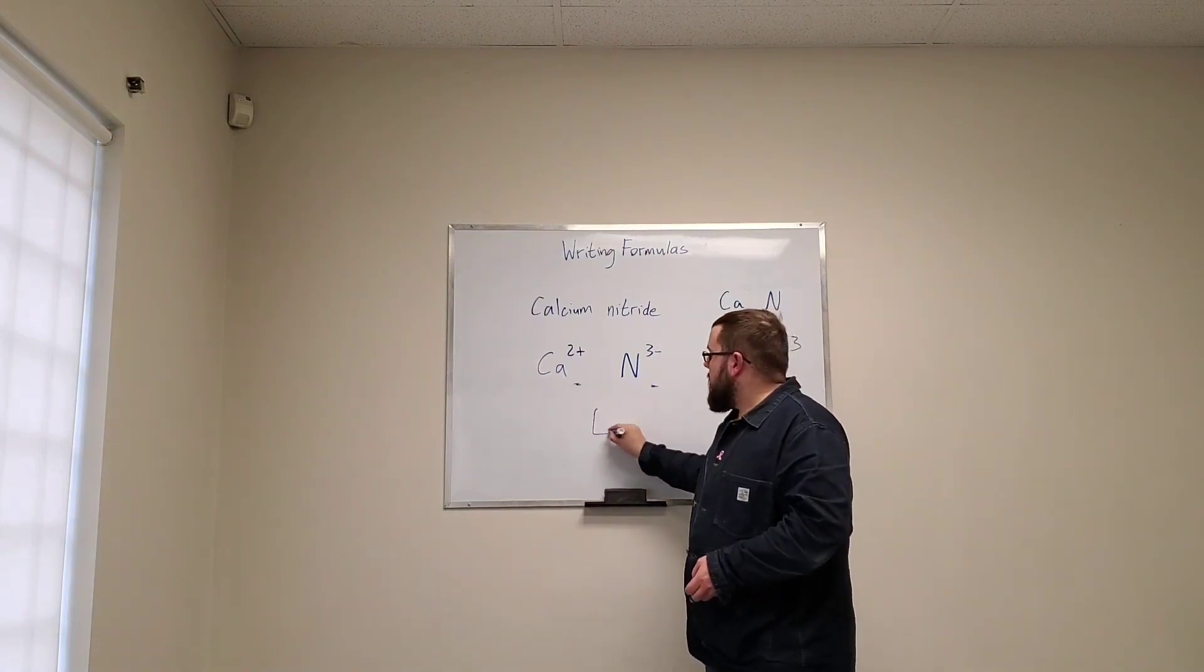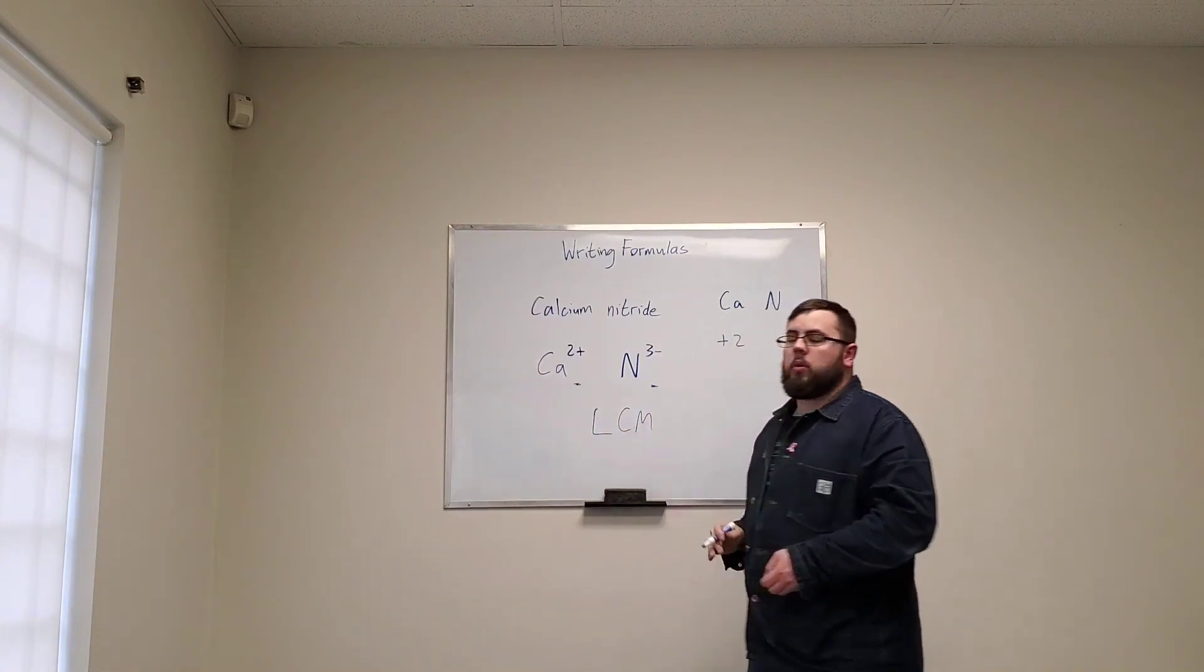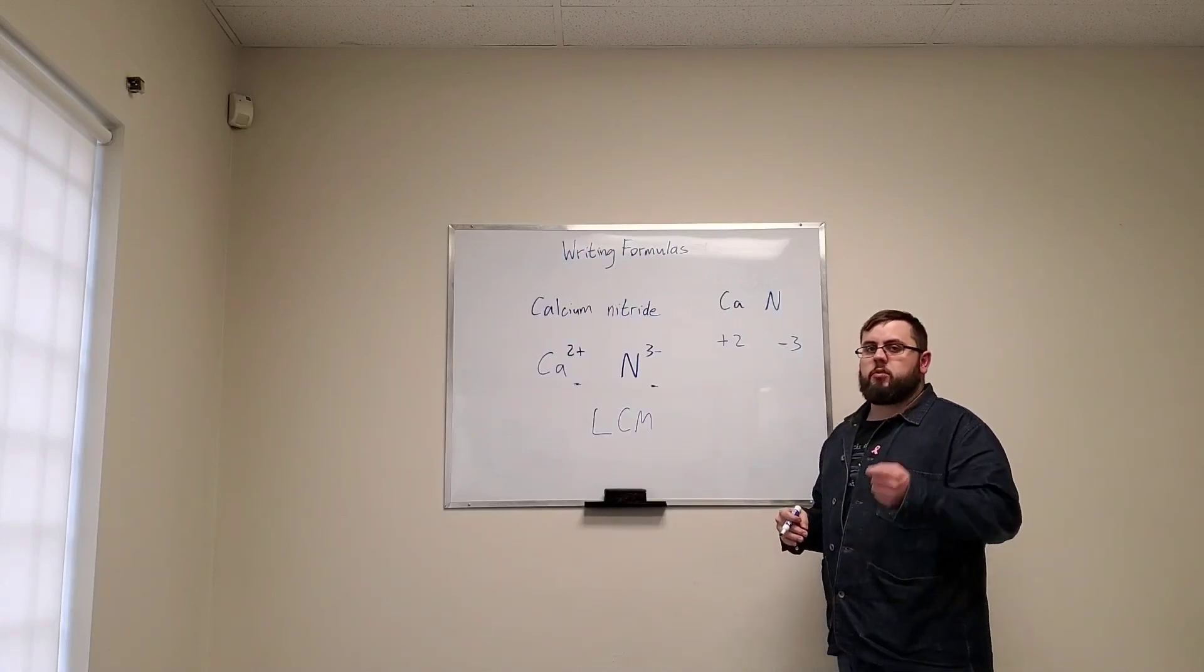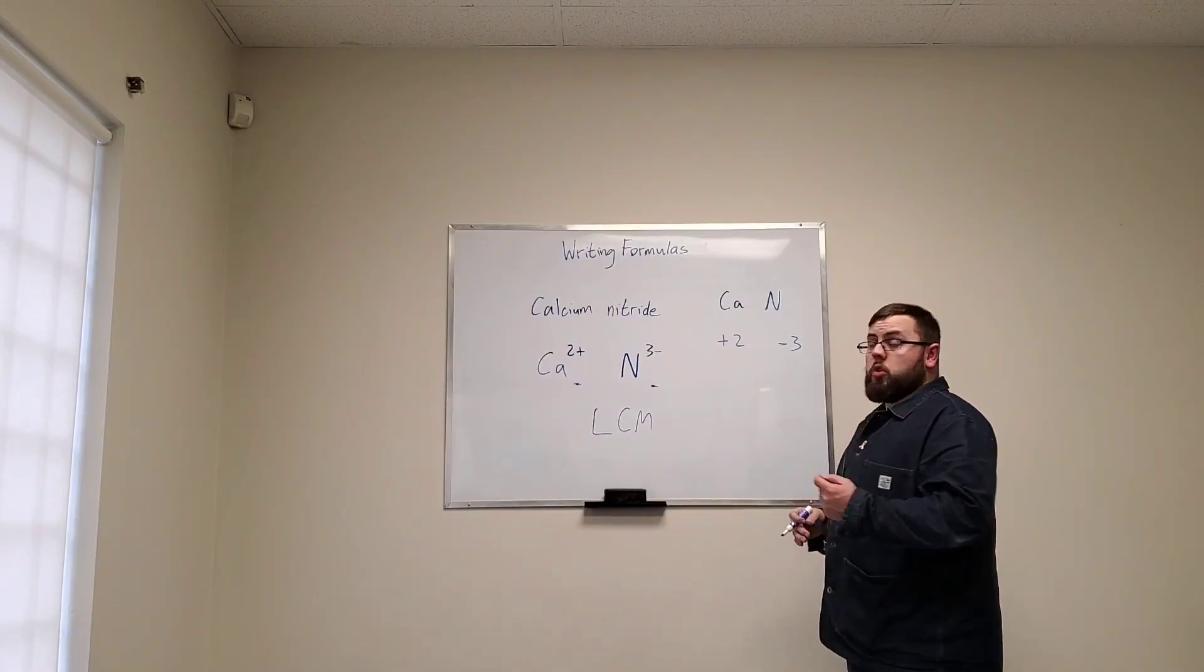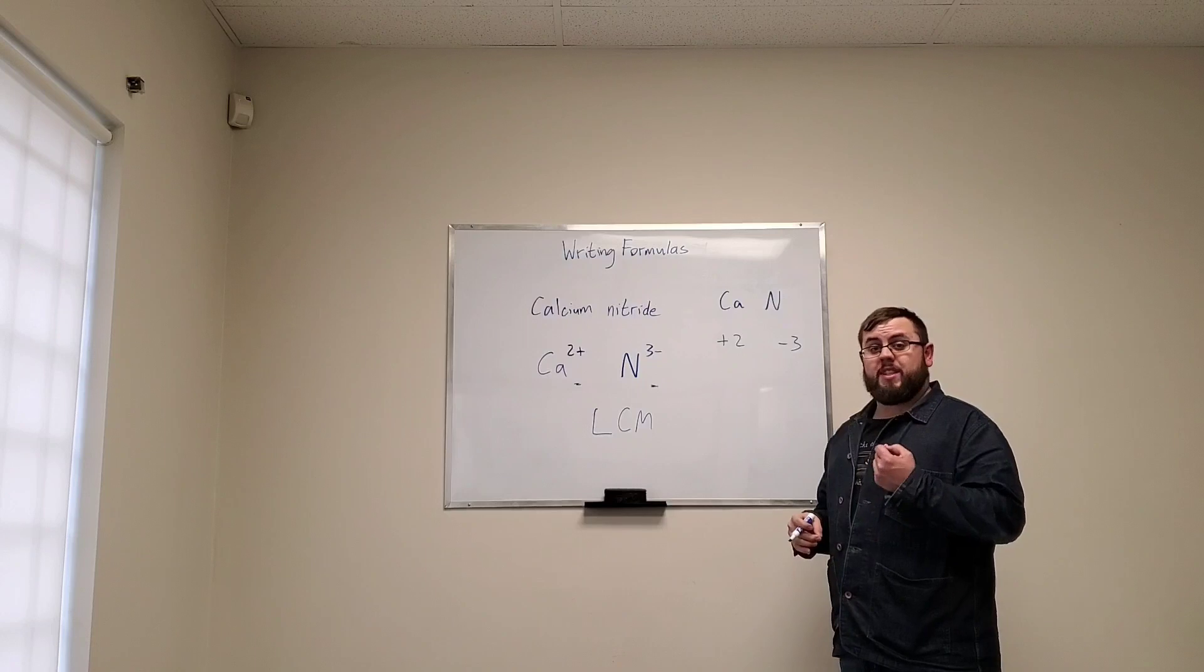This is a math term, right? The lowest common multiple. Now both of these numbers multiply into 2 and 3. Well, 2 and 3—the lowest common multiple is 6.